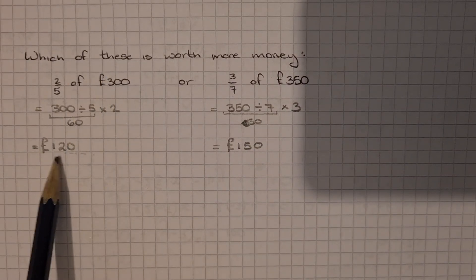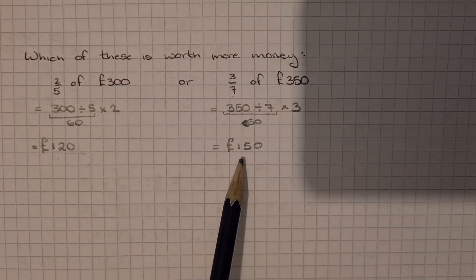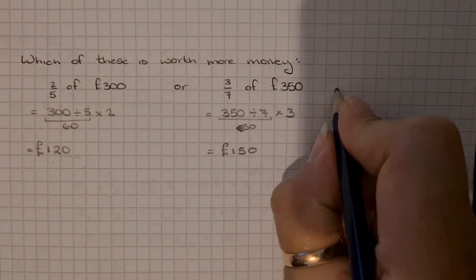So this one equals 120. This one equals 150. So which one is worth more money? Well it would be the 3 sevenths of 350. So that one is worth more.